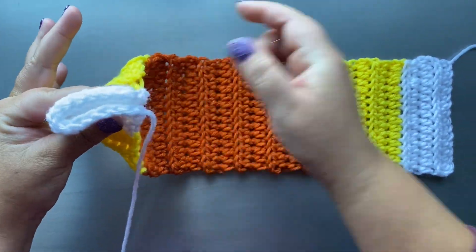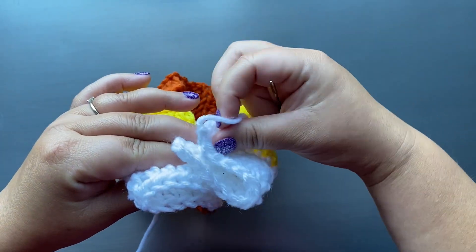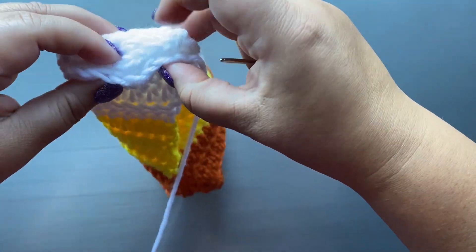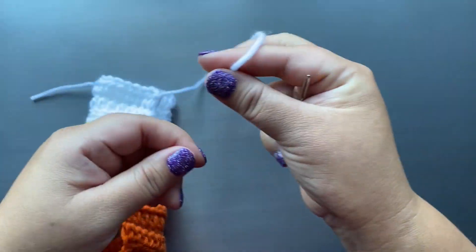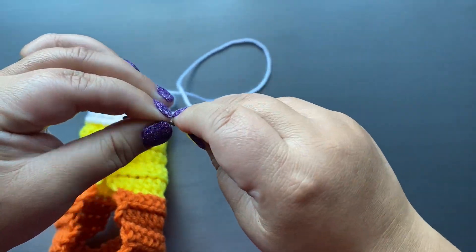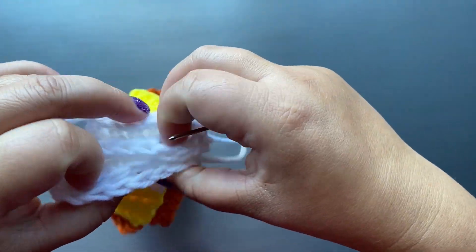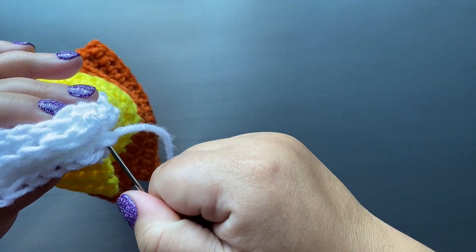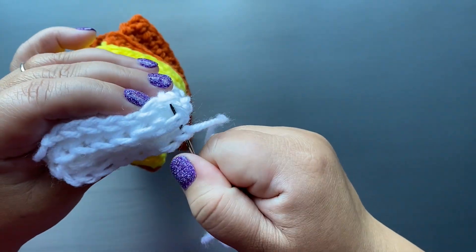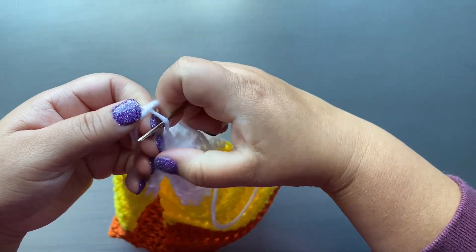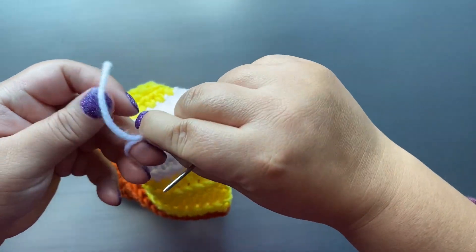Take the short ends of your headband and fold them in half. Sandwich them together and take the tail of your headband and thread it through your yarn needle. Take your yarn needle and seam the headband together, working back and forth. Tie off your work and weave in your ends and you're all done.